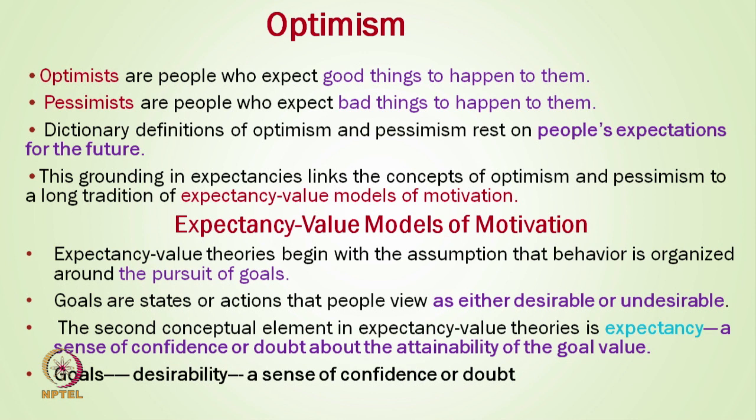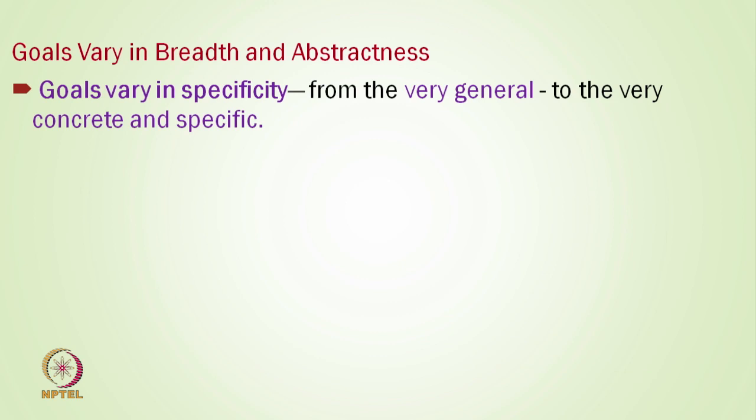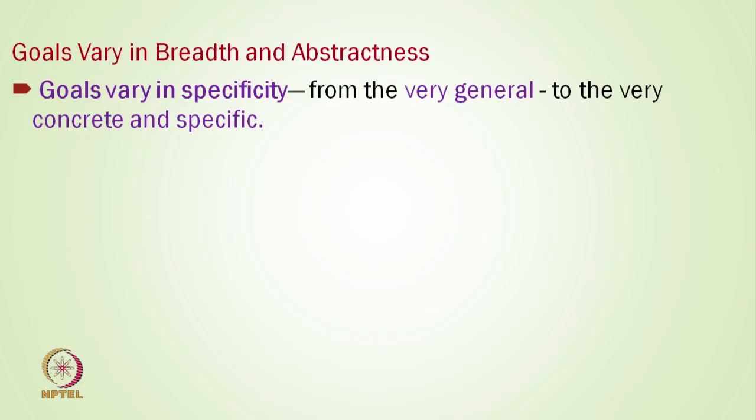Goals are states or actions that people view as either desirable or undesirable — we observe whether we expect desirable or undesirable goals in the future. The second conceptual element in expectancy value theory is expectancy — a sense of confidence or doubt about the attainability of goal value. Important variables are goals, desirability, and sense of confidence or doubt. Goals vary in specificity from the very general to the very concrete. In some situations we have very concrete and specific goals; in others, we may have very general goals.